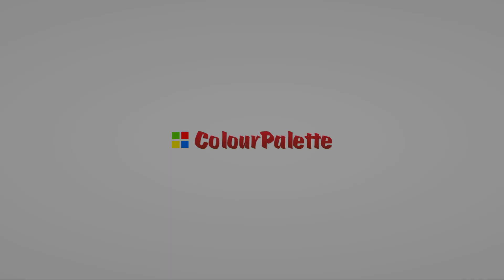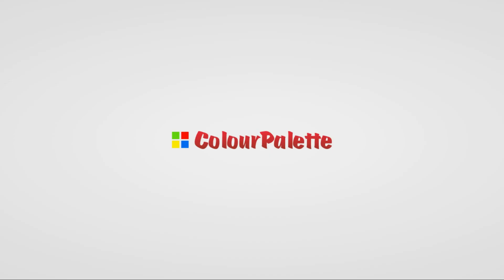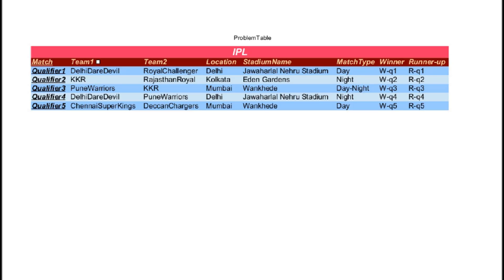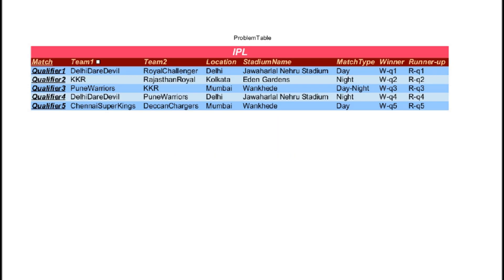Welcome to the Color Palette video series. So I was talking about third normal form. We already saw that here there exists a transitive dependency between the stadium name and the location — that is, we can easily derive the stadium name given the location. So to normalize the table in third normal form, we need to take out the transitive dependency.